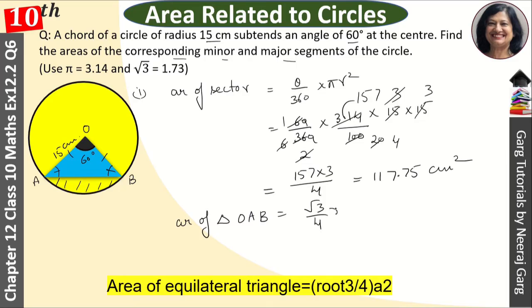We have to put root 3 value, 1.73 upon 4, and r given is 15 into 15. When you solve this, this will come here, so root 3 by 100.